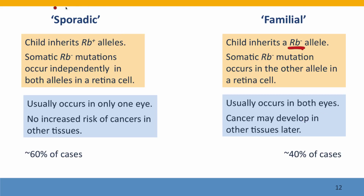In sporadic cases, everybody else falls into this category — only about one in 10,000 to 100,000 people inherits a defective allele. But the chance of two retinoblastoma mutations happening in the same cell is very low. So we have a large population and a small probability. In the familial case, it's a small population and a high probability. But the net effect is roughly the same frequency of cases.